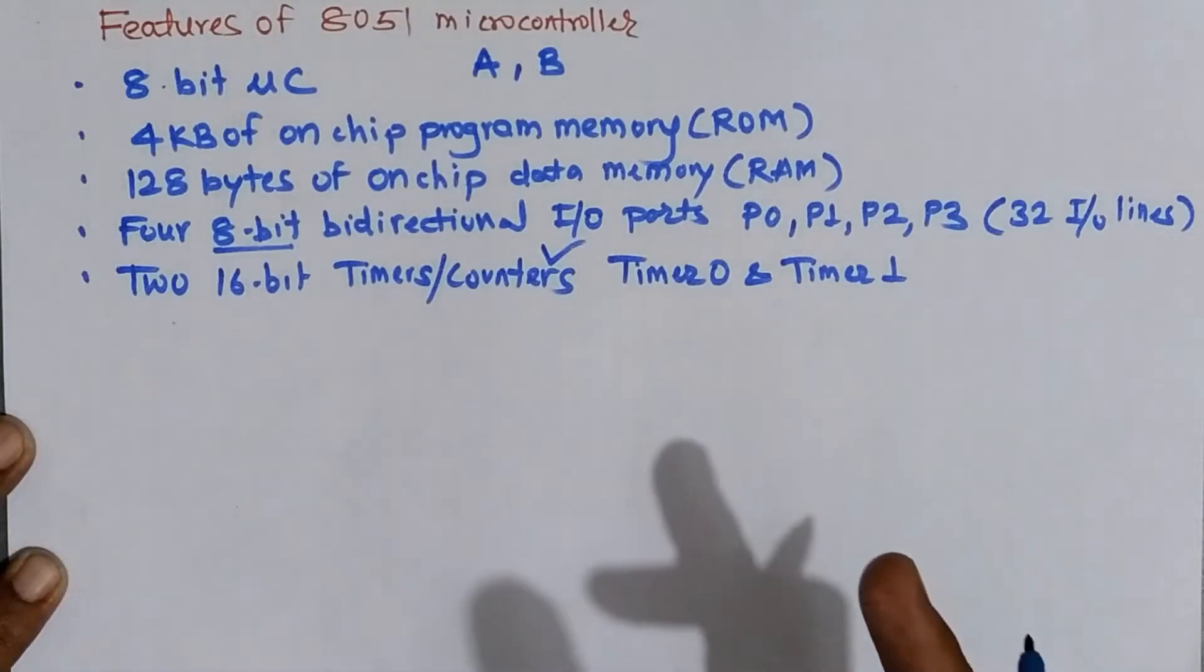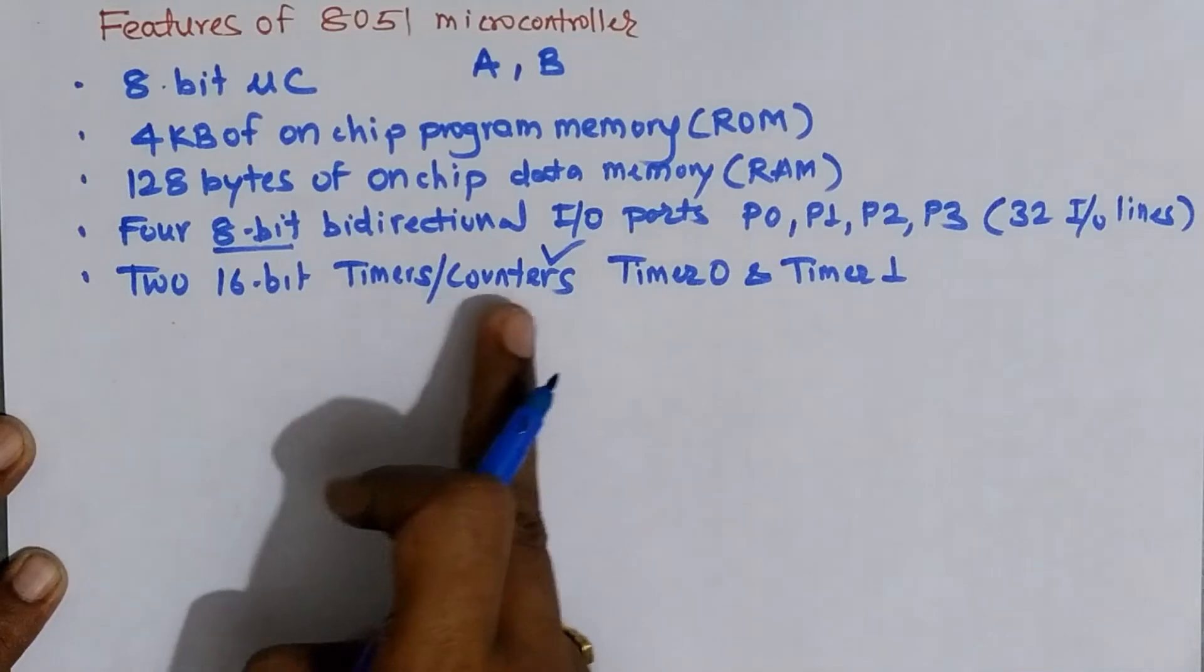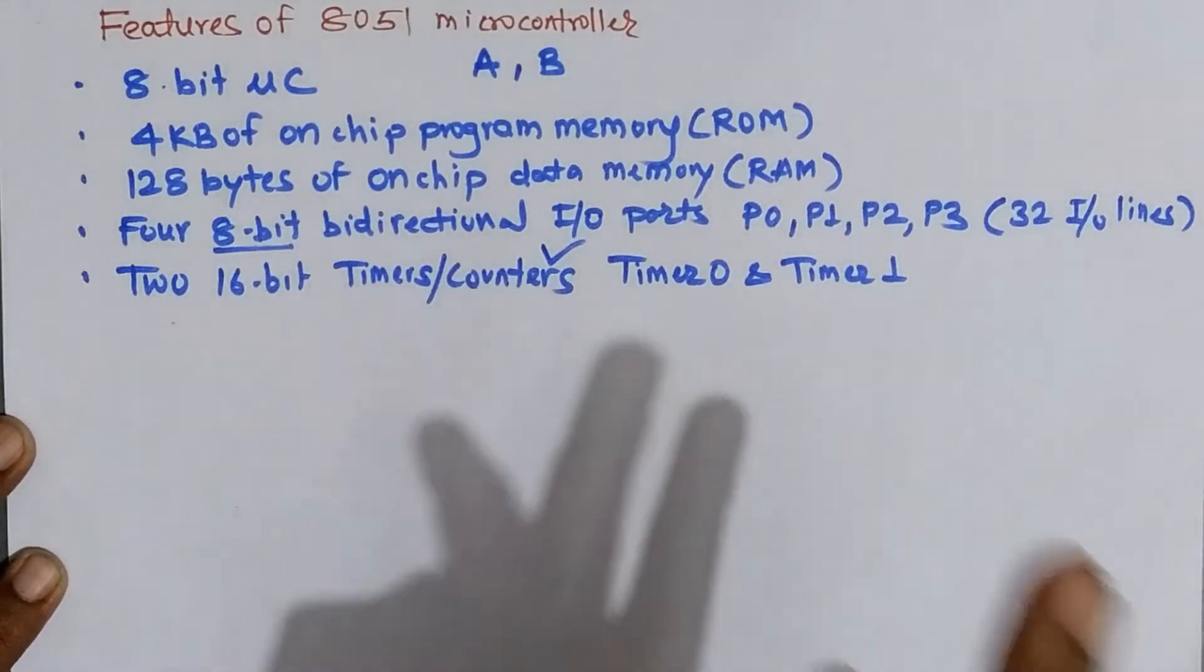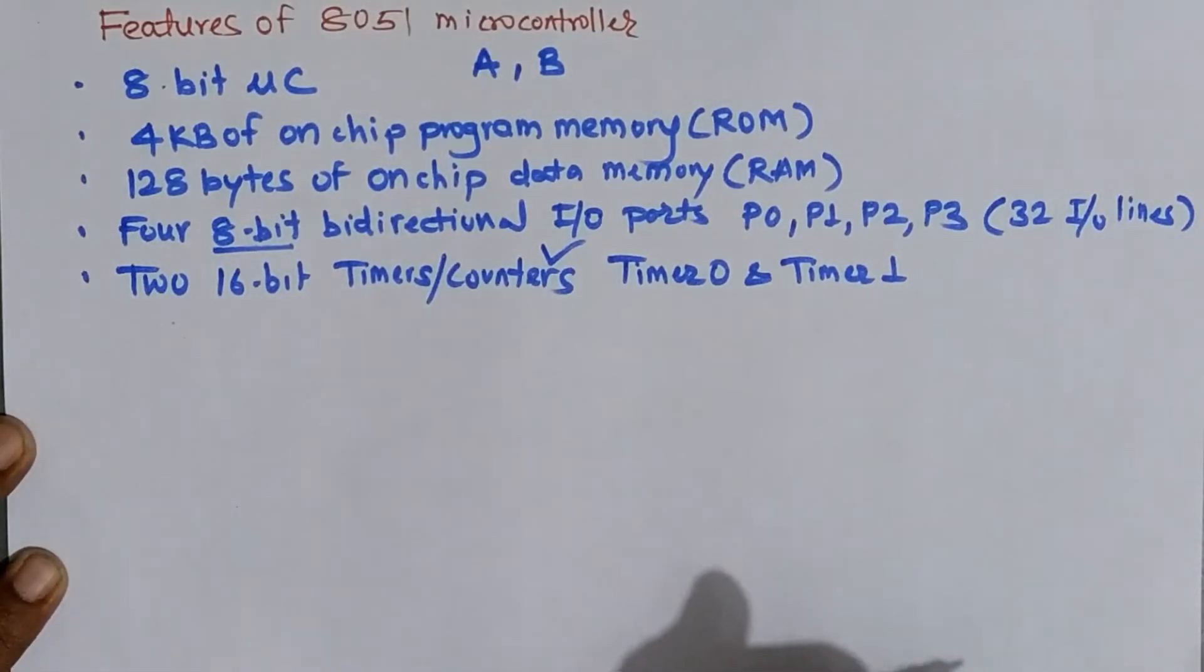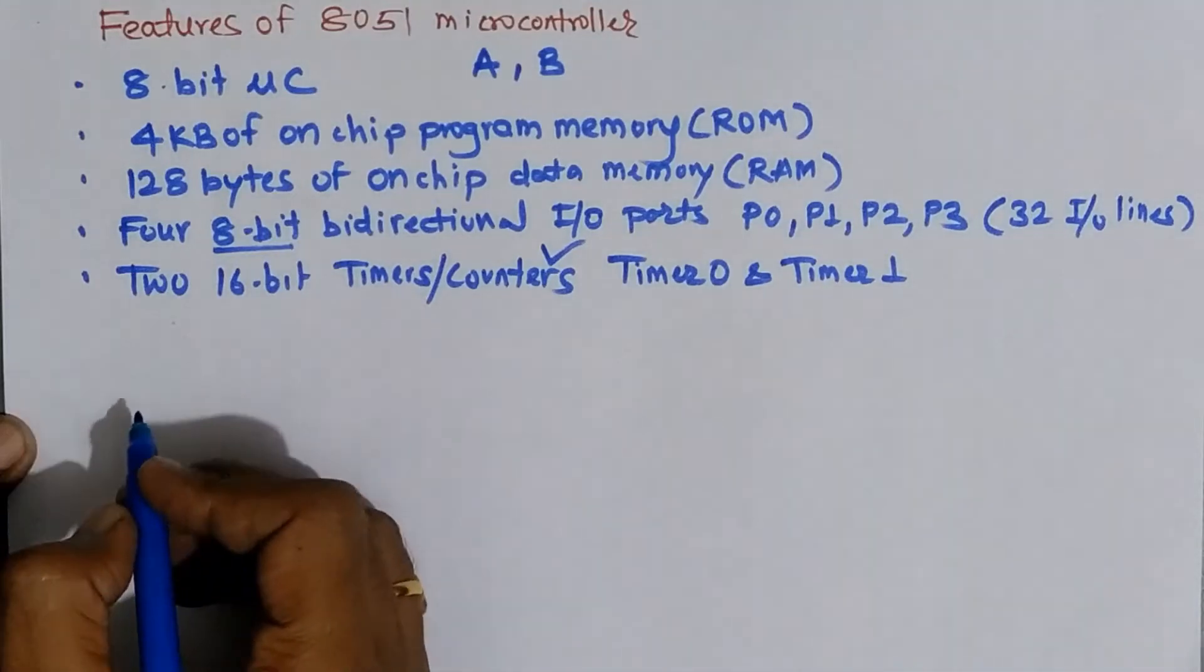The second application of timer is it can be used as a counter to count external events. How many events have occurred that can be counted when we operate timer in counter mode. And third application of timer is it is used to set baud rate in serial communication. So user can set the baud rate according to his or her choice by using timer in two different modes of serial communication that is mode 1 and mode 3 because they are having variable baud rate setting.